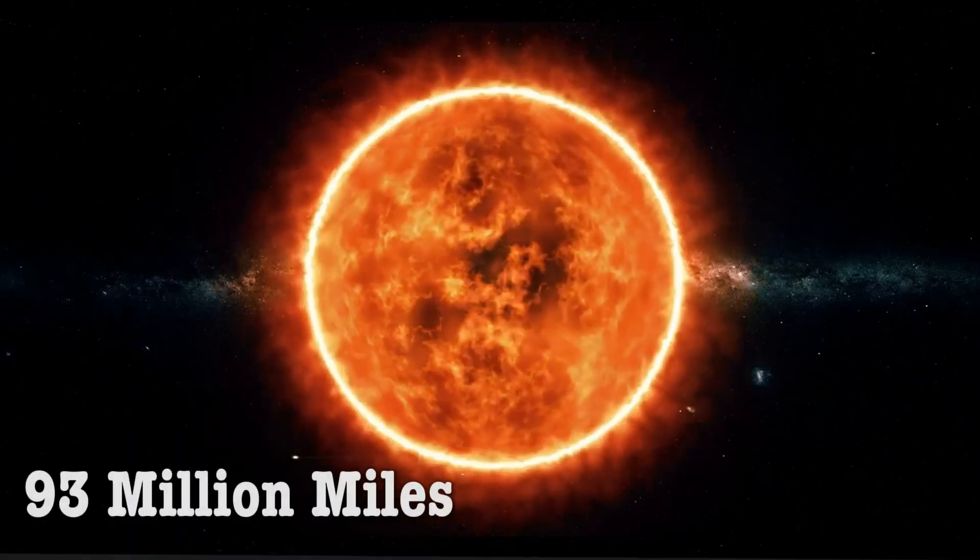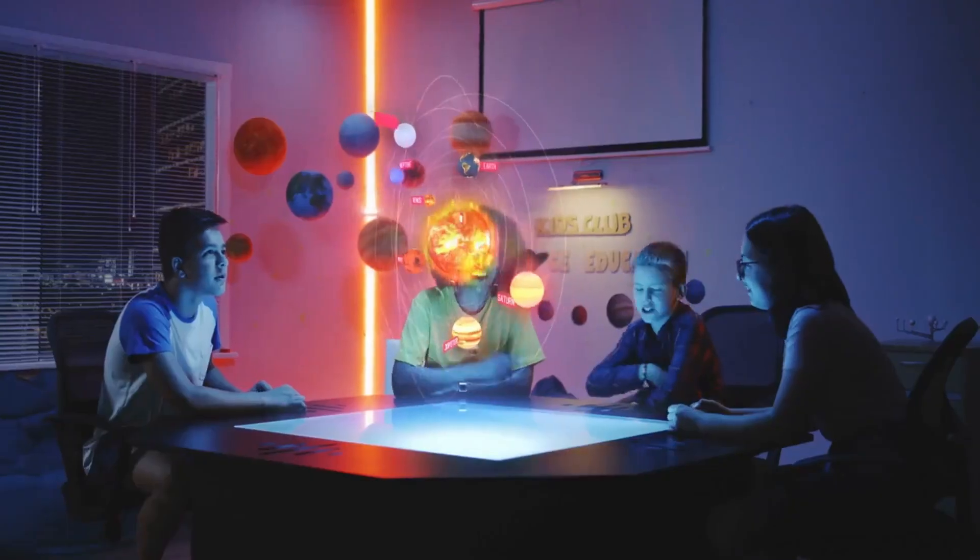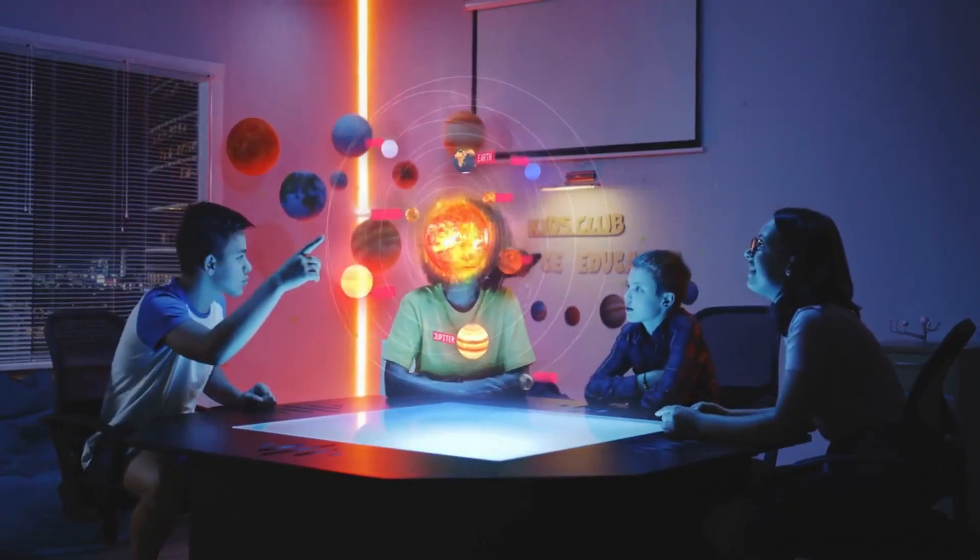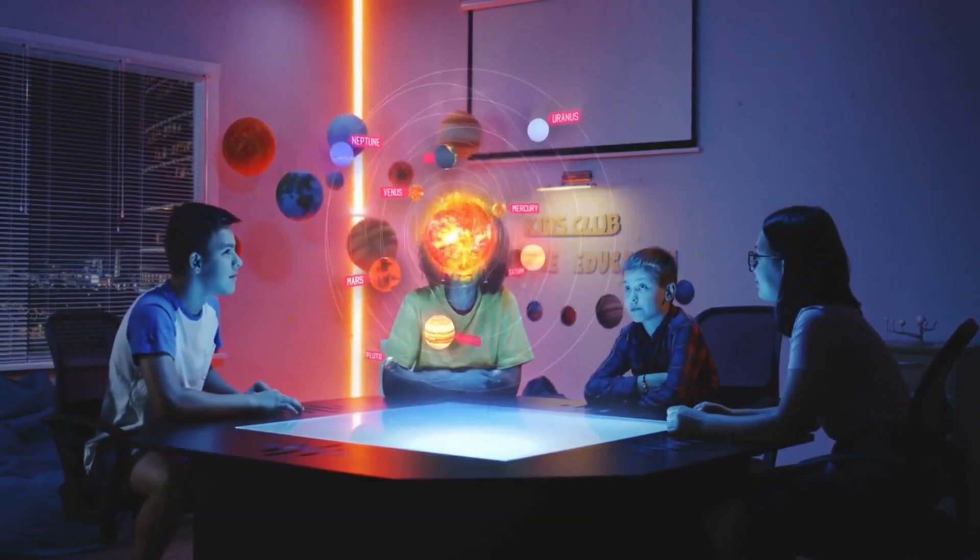It's about 93 million miles away from Earth, which is a big deal in space lingo. We measure distances in space using this unit called an astronomical unit, and it's like our ruler for the solar system.